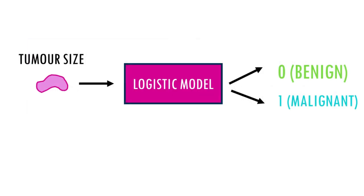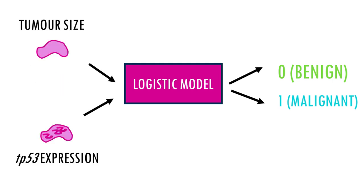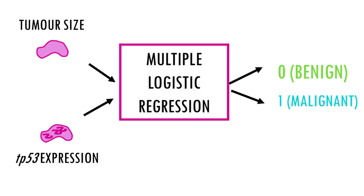For example, we might want to improve our ability to predict malignancy of a tumor by adding the expression level of TP53, a famous oncogene, in our model. So we would build a model using the tumor size and TP53 biomarker expression level as predictors. The model would then estimate the probability of a tumor being malignant based on these features.